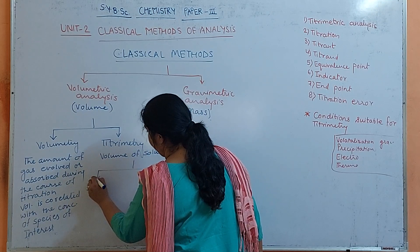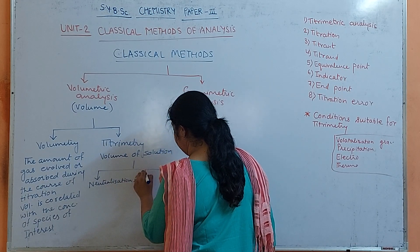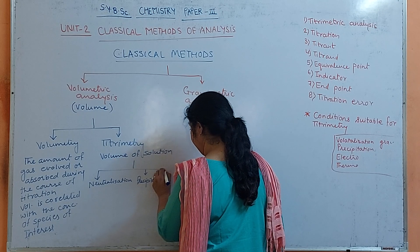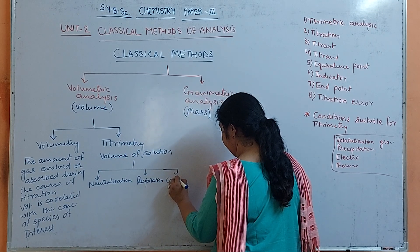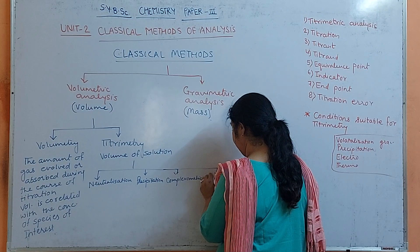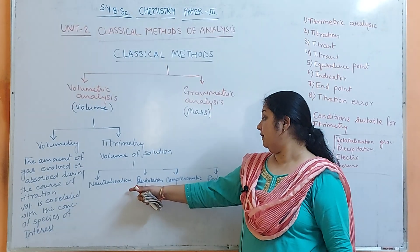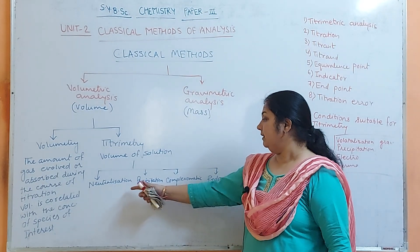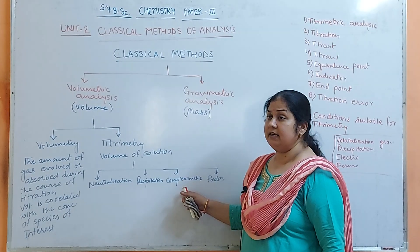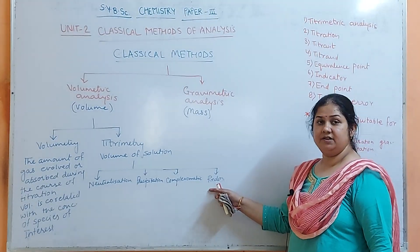In Titrimetry there are four types: Neutralization, Precipitation, Complexometry, and Redox. In the first three types of titrimetry, change in oxidation state or number does not take place, whereas in the case of Redox, change in oxidation state takes place.